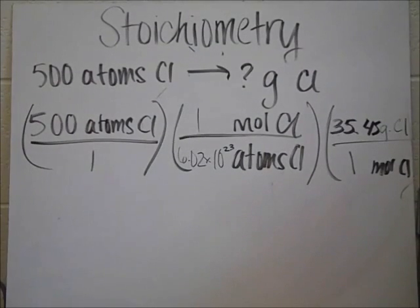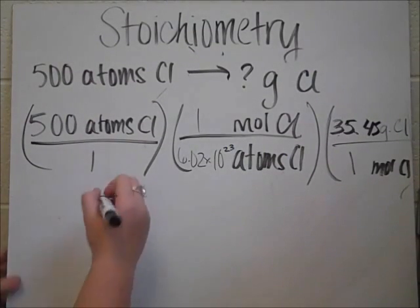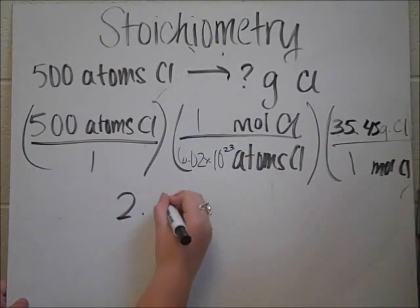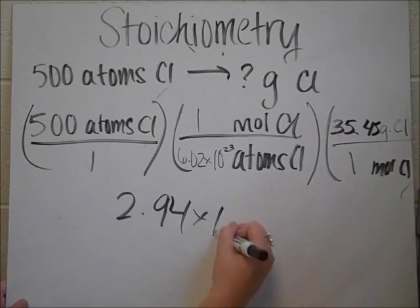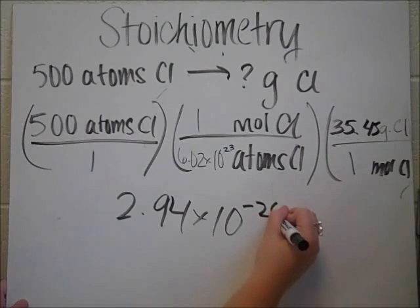And then when you plug that all in your calculator, what you're going to find out is it equals 2.94 times 10 to the negative 20th grams of chlorine.